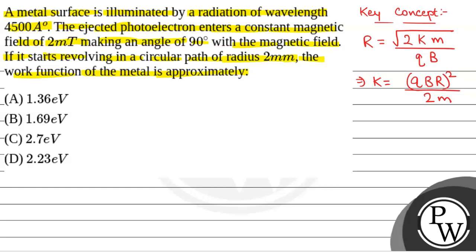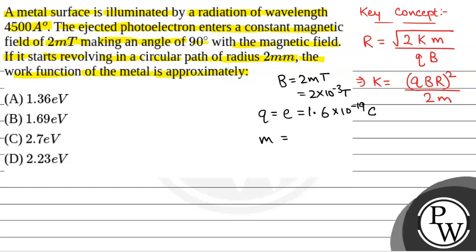We have been given: magnetic field b is equal to 2 millitesla, that is 2 into 10 to the power minus 3 tesla. The charge on electron e is equal to 1.6 into 10 to the power minus 19 coulombs. Mass of the electron is equal to 9.1 into 10 to the power minus 31 kg. And radius r is 2 mm, that is 2 into 10 to the power minus 3 meter.